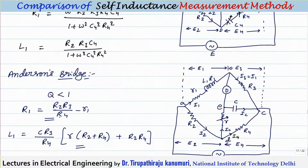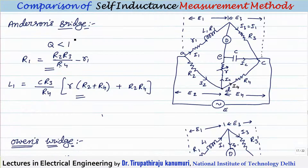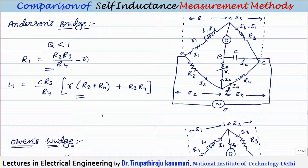The Anderson bridge is used because the previous two bridges cannot be used for measurement of low Q values — particularly for Q less than 1. In the Anderson bridge, one extra junction is formed, and the advantage is the capacitor value is fixed; balance is obtained by using variable resistors R and R1.